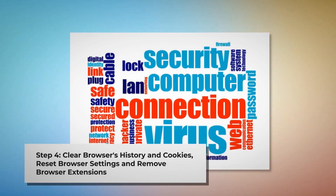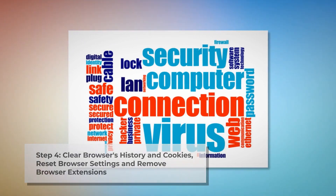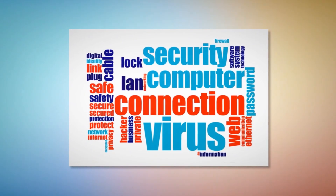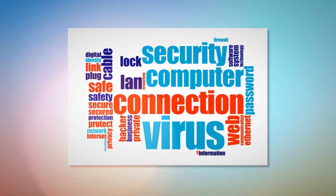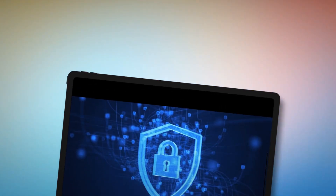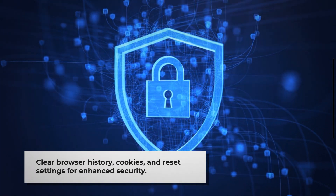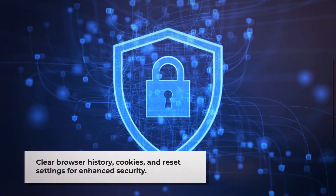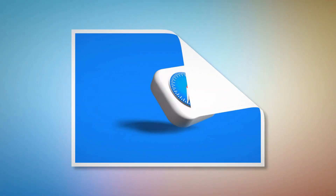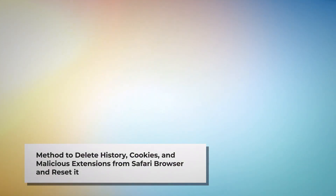Step four: clear your browser's history and cookies, reset browser settings, and remove or disable unknown browser extensions. Once you delete the harmful files from step three, you should delete malicious or unknown extensions from your browsers — Safari, Chrome, Firefox, Opera, and so on — whichever you are or were using. You should also delete browser history and cookies, and reset your browser. Note: before resetting, it is always a good idea to back up your bookmarks.